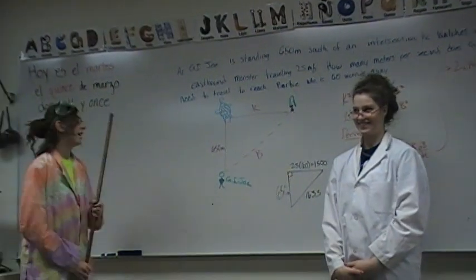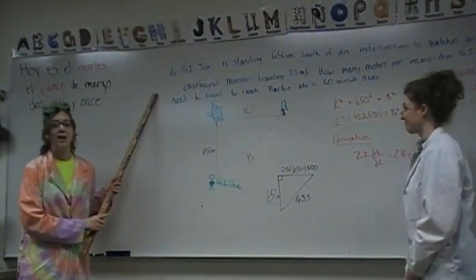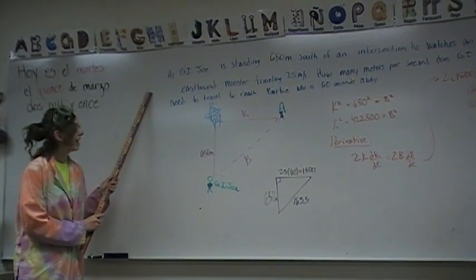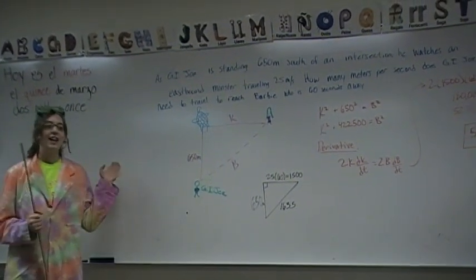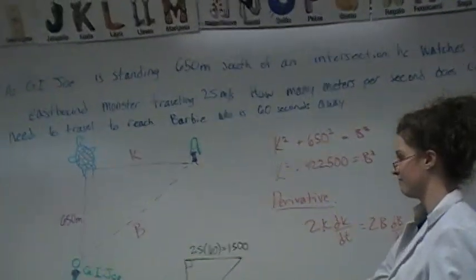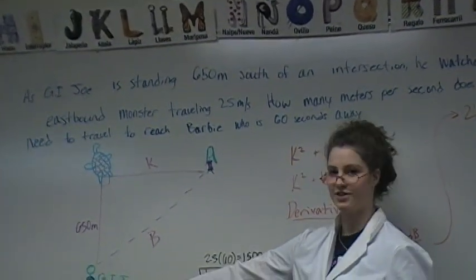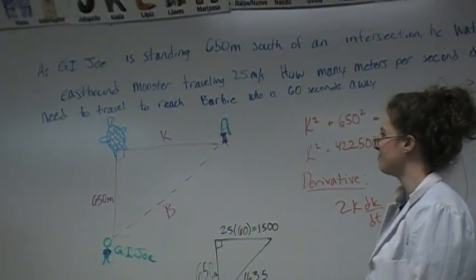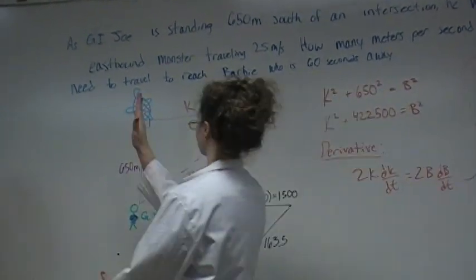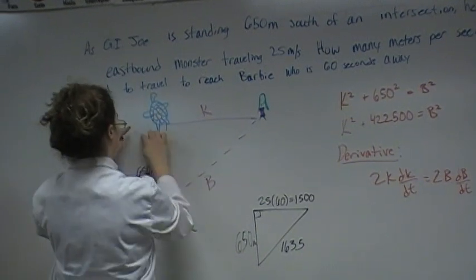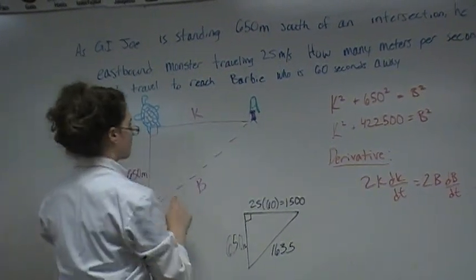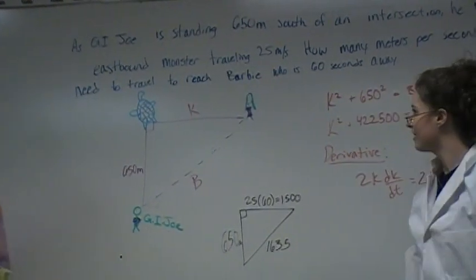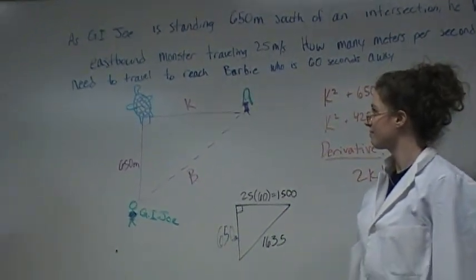Hey folks, we're going to be talking about this problem. As it states, as G.I. Joe, Katie will point out the G.I. Joe diagram, is standing 650 meters south of an intersection, he watches an eastbound monster traveling 25 meters per second. How many meters per second does G.I. Joe need to travel to reach Barbie who is 60 seconds away?